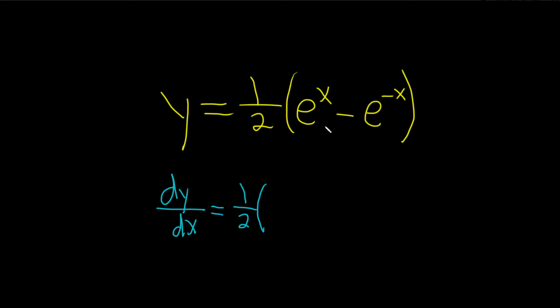And then we'll just take the derivative of each piece. The derivative of e to the x is simply e to the x. And then when we take this derivative, we have the minus—the derivative of e to the negative x is e to the negative x, and then you multiply by the derivative of the inside function.